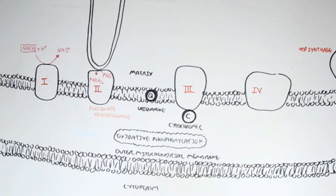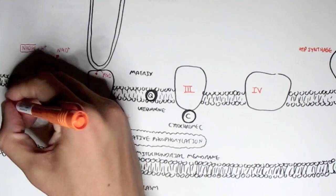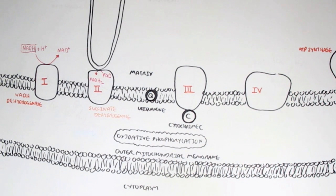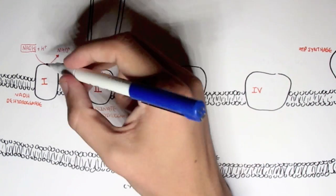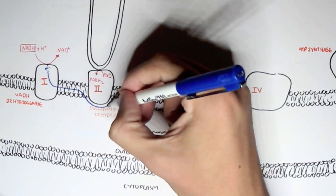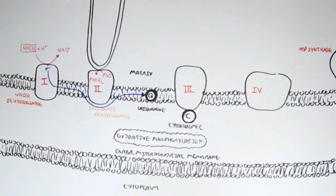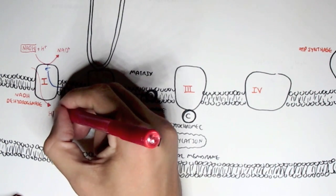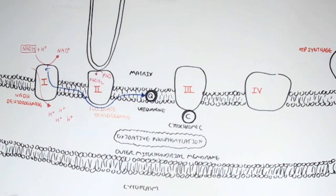Complex one will oxidize NADH to form NAD, and therefore complex one is known as NADH dehydrogenase. During this process, the electrons will be obtained from the oxidation of NADH, and the electrons will be passed on to ubiquinone. Also during this process, hydrogen ions are pumped from the matrix into the intermembrane space.